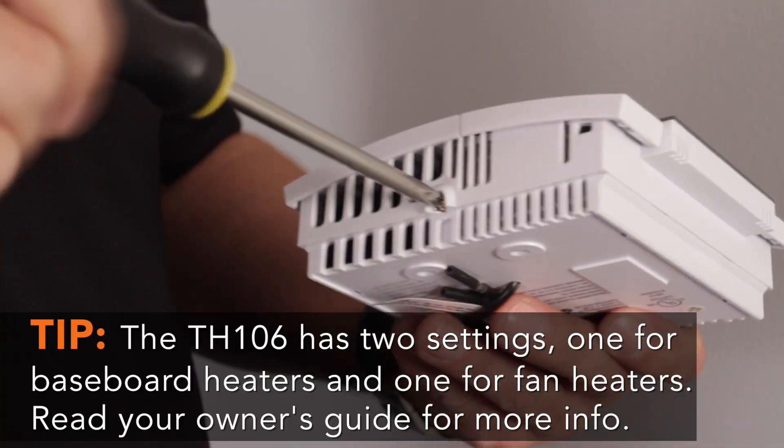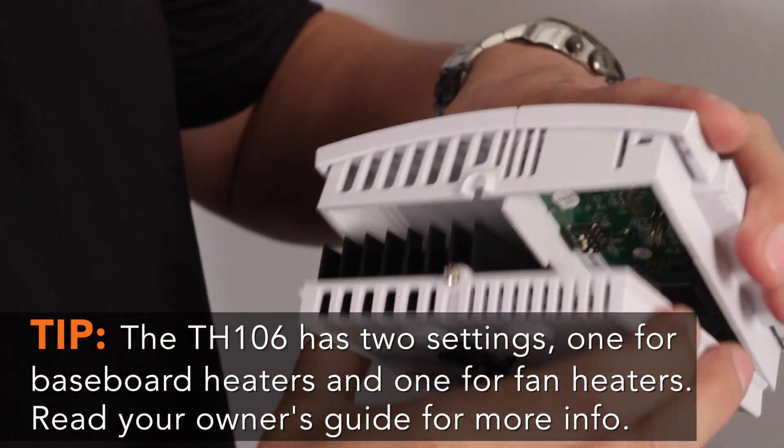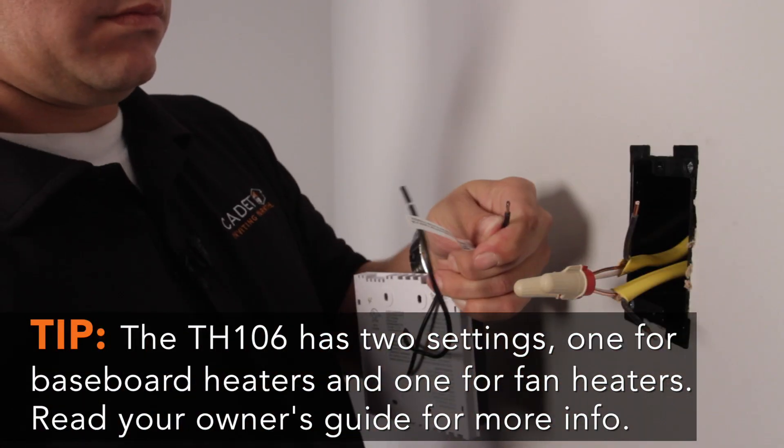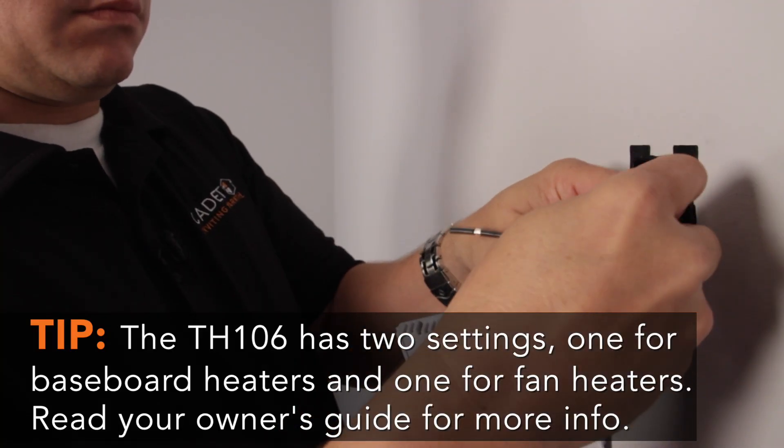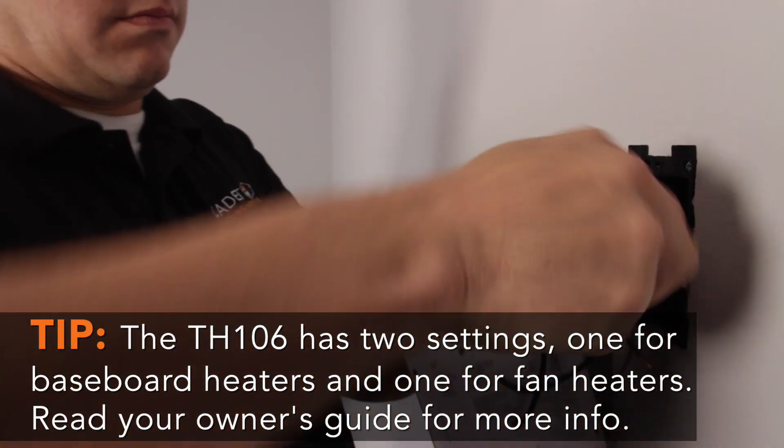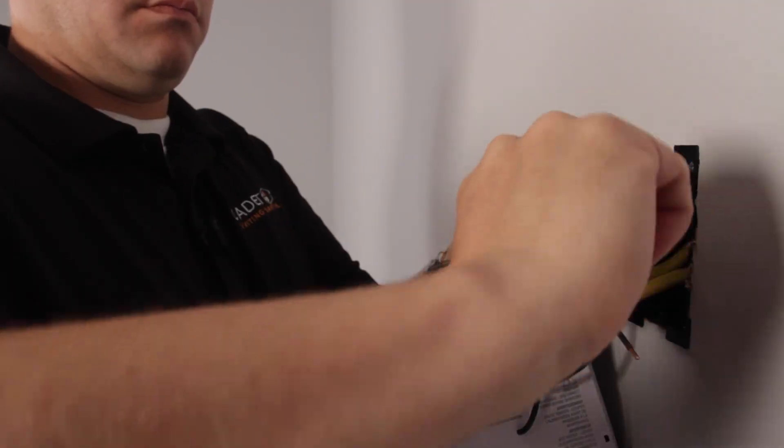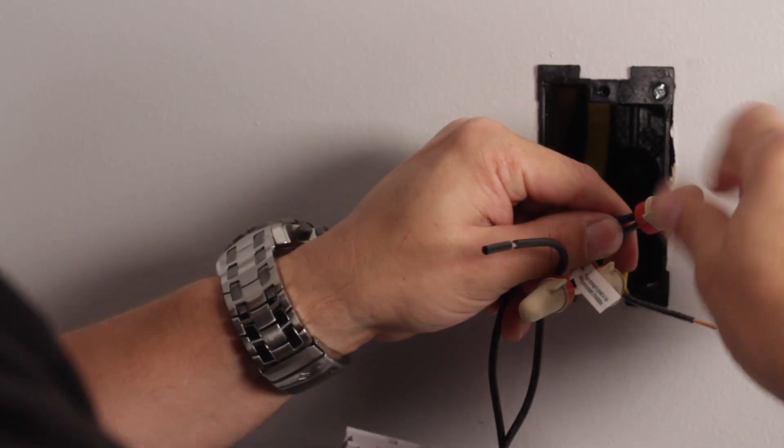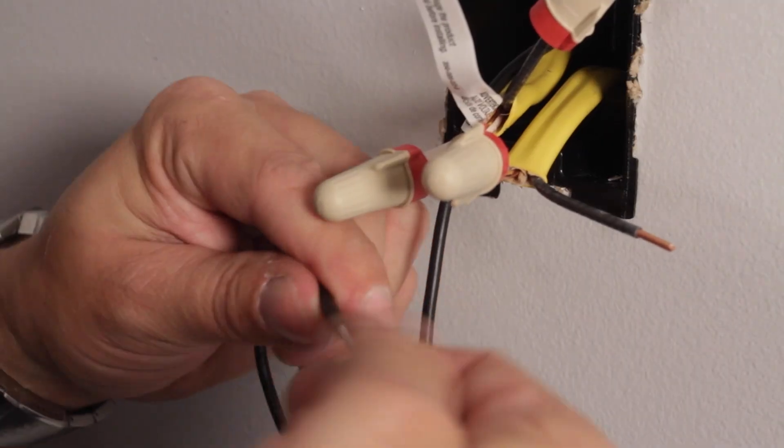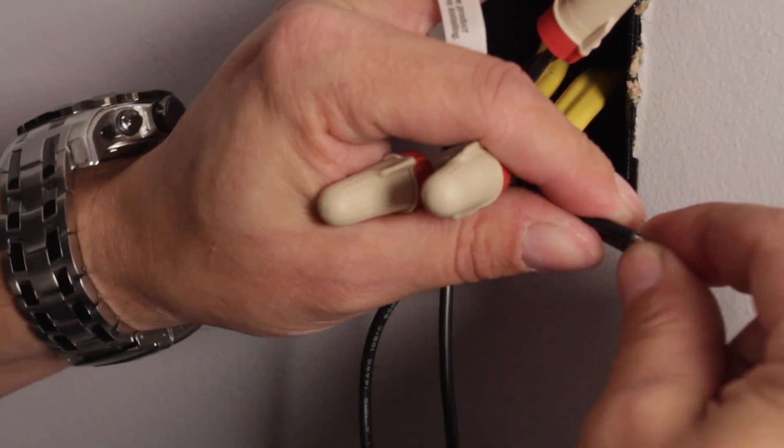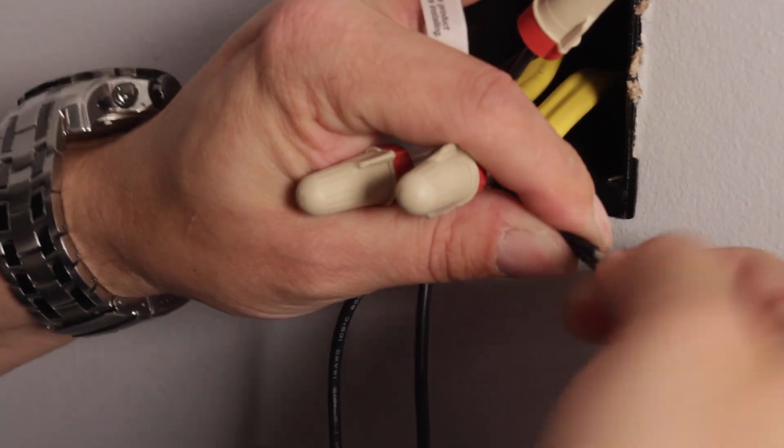Unscrew the set screw and disconnect the thermostat from the sub base. The TH106 is not polarity sensitive, so you can connect either black wire on the sub base first. Connect one wire from the sub base to one black wire coming from the J-Box. Now connect the remaining wire on the sub base to the remaining black wire in the J-Box.